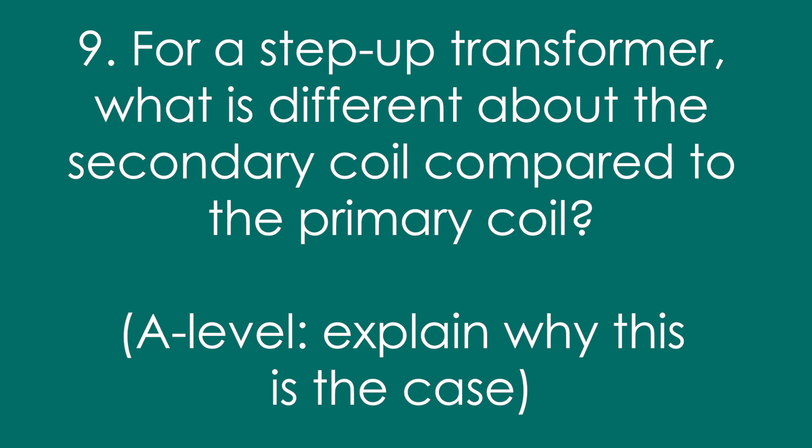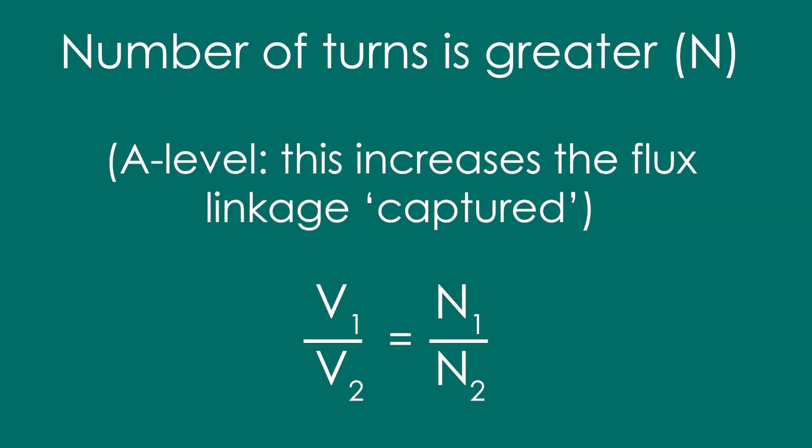Question 9: For a step-up transformer, what is different about the secondary coil compared to the primary coil? The number of turns is greater. At A level, this is because it increases the flux linkage captured by the coil, meaning EMF is proportional to the number of turns — V is proportional to N — so V₁/V₂ equals N₁/N₂.